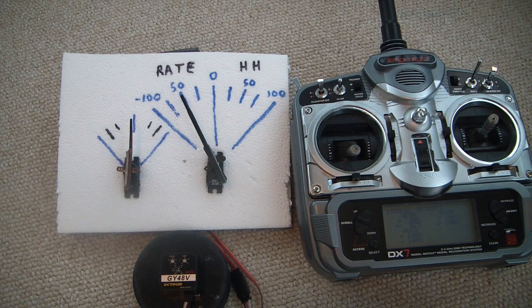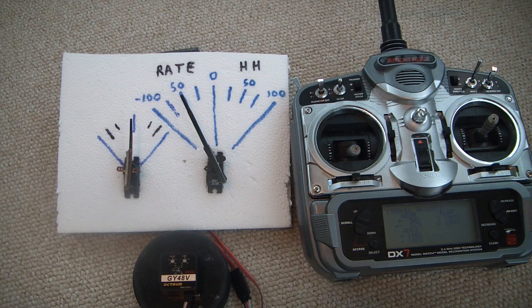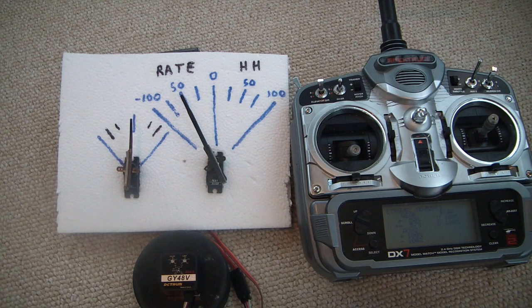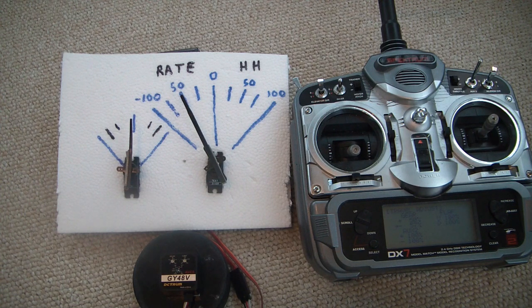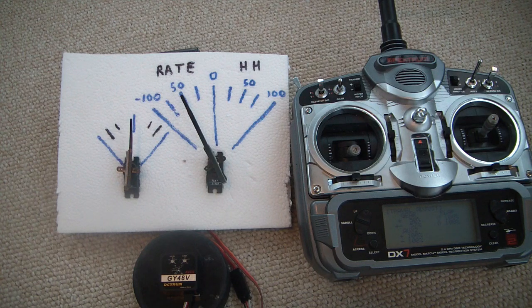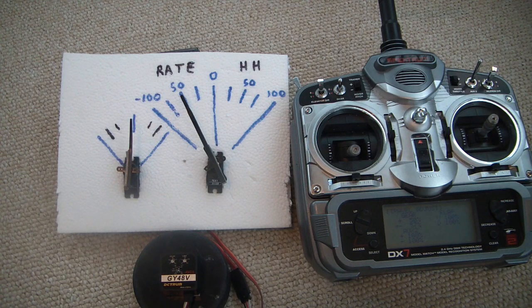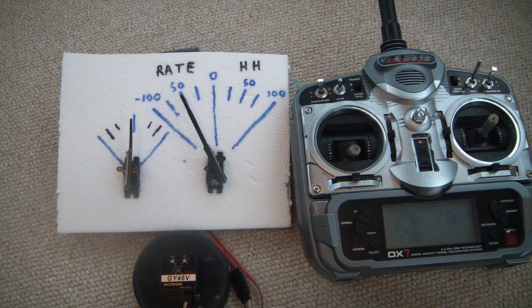If you have it set up on a switch so that you can change the gyro gain, great. Lower that gain or flip the switch so that the gyro is essentially turned off. But you do not want to have your initial flights set up for a high gain rate. 30% is a good value I think to start off with.